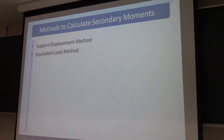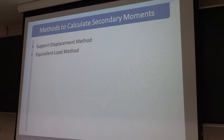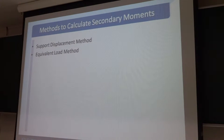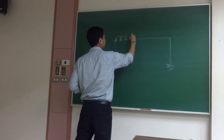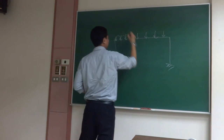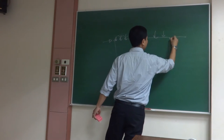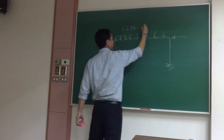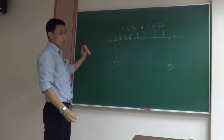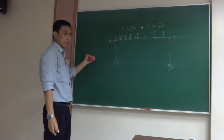Normally, in software, when we analyze for the secondary moment effect, first we apply the post-tensioning forces. Then we get the support reactions of the members. Those support reactions we apply back in the model, removing the restraint, and then we check the resulting moments. For ultimate strength design it will be 1.2 dead load plus 1.6 live load. In the serviceability check, we balance with 70% or 80% of the dead load.